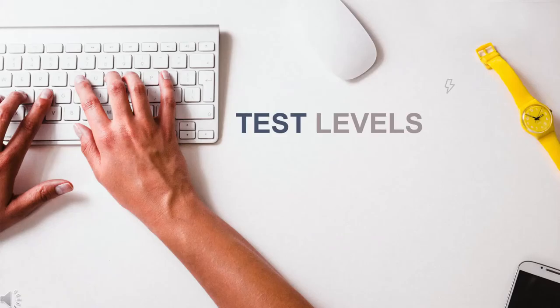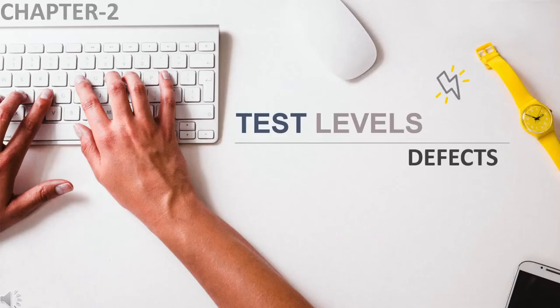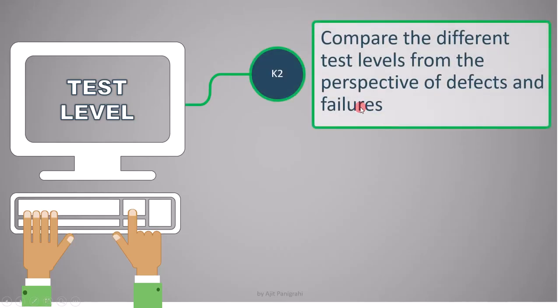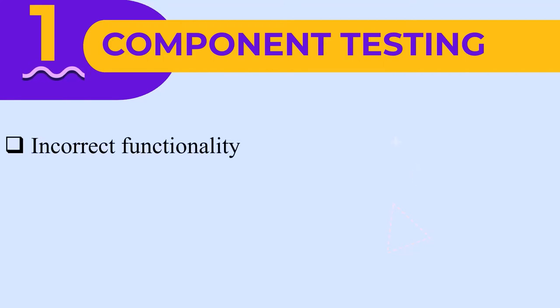In this lecture we will see the types of defects and failures. What you need to remember is which defect belongs to which testing level. The learning objective here is to compare the different test levels from the perspective of defects and failures. The first testing level is component testing, and the types of defects we find here are incorrect functionality, data flow problems, and incorrect code and logic.